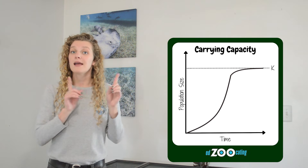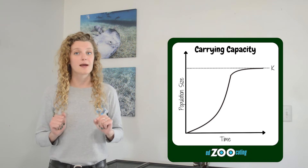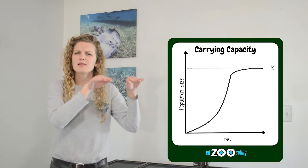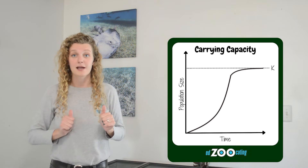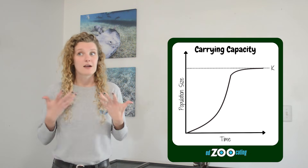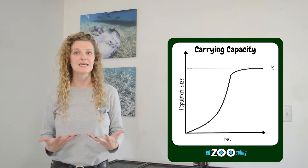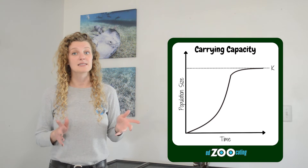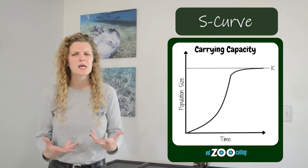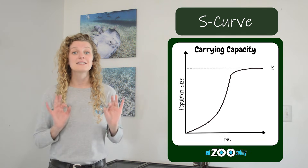Now let's switch gears to the other type of graph, which is what we would typically expect to find in a healthy ecosystem. What we would usually see is an organism's population size growing until it runs out of those limiting factors we mentioned, and then we see the growth kind of level off — their population size stays right around the carrying capacity. Remember, if an organism lives in a healthy, balanced ecosystem, their population size usually stays right around the carrying capacity. This type of graph, which we typically expect to find, is called an S-curve.